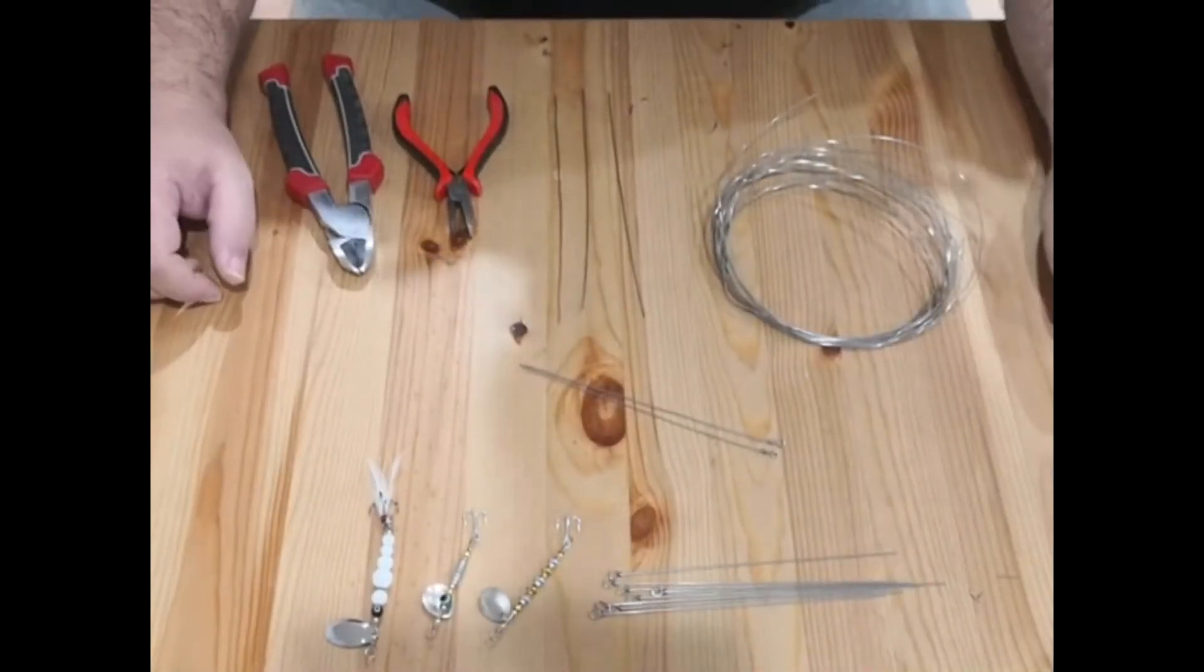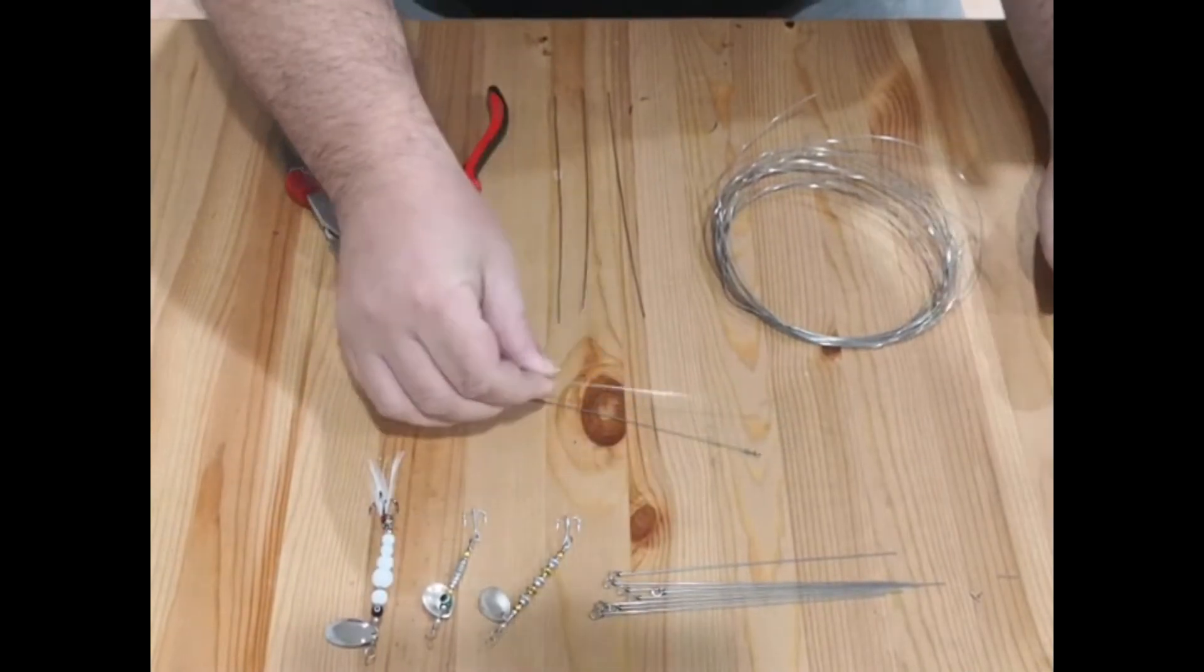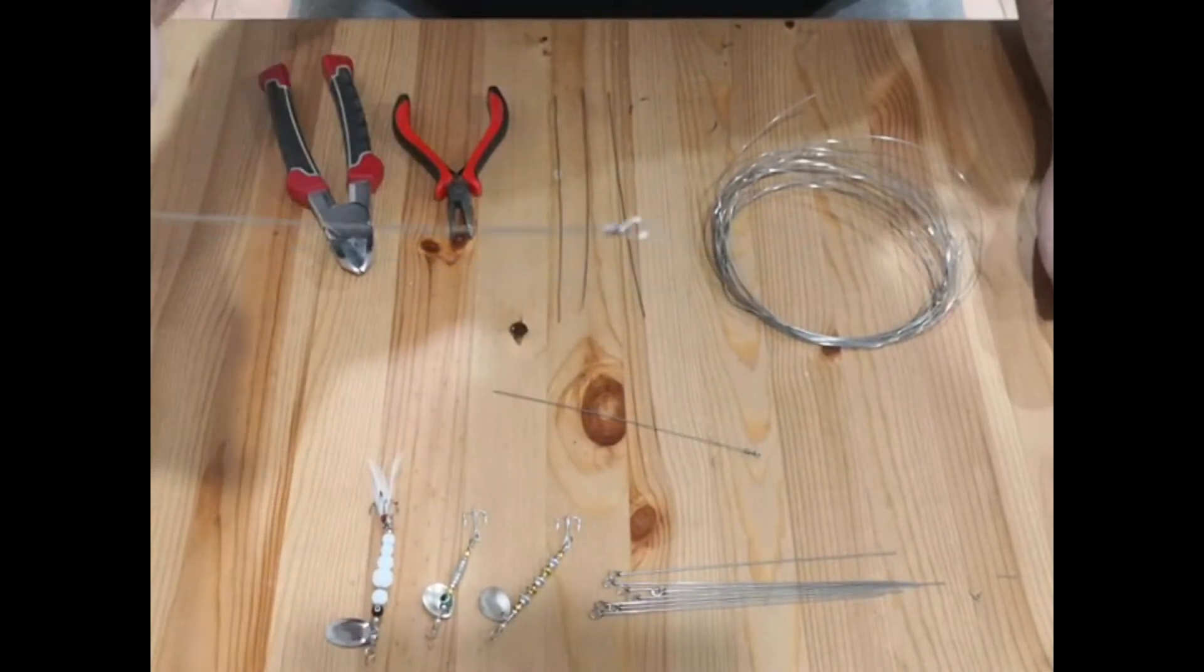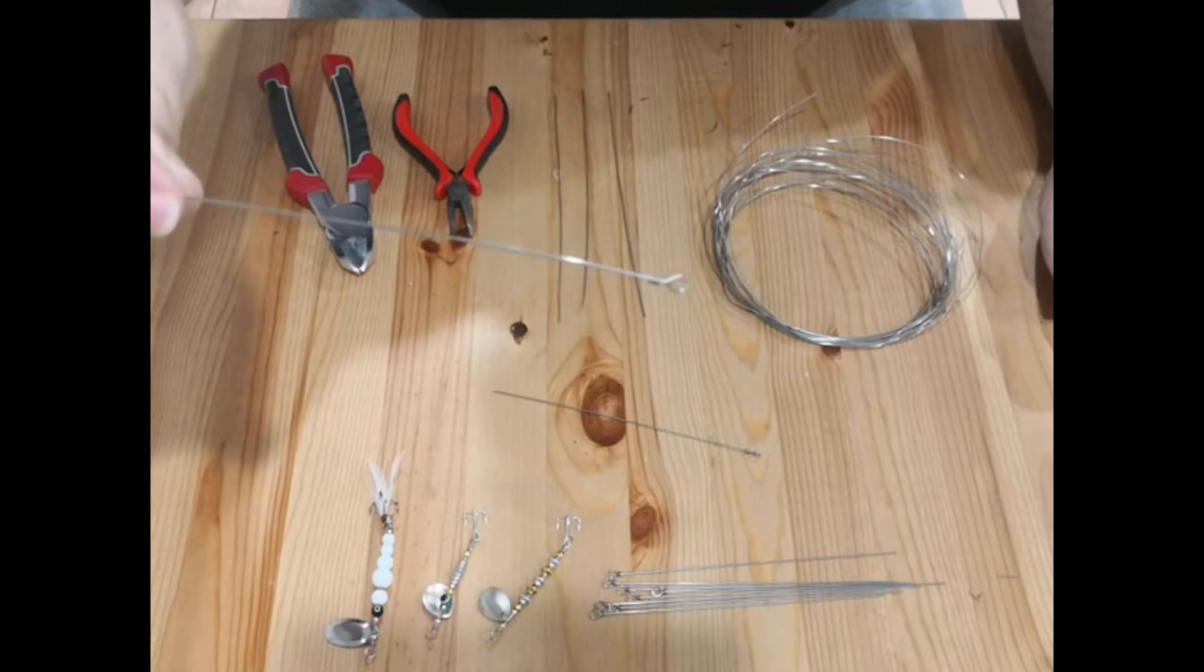Alright, so what is a wire form? A wire form is essentially the base of a spinner lure. It's what you start with, it's the backbone, it's the strength.